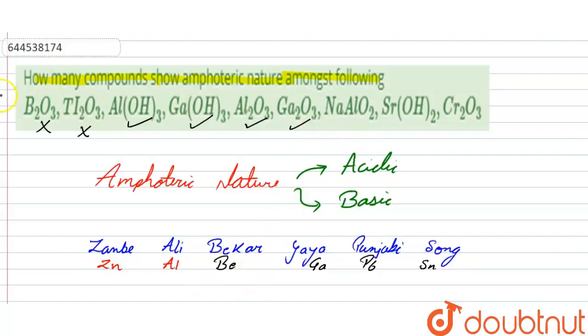So that is why our correct option is: Al(OH)₃, Ga(OH)₃, Al₂O₃, Ga₂O₃. That's all, thank you.